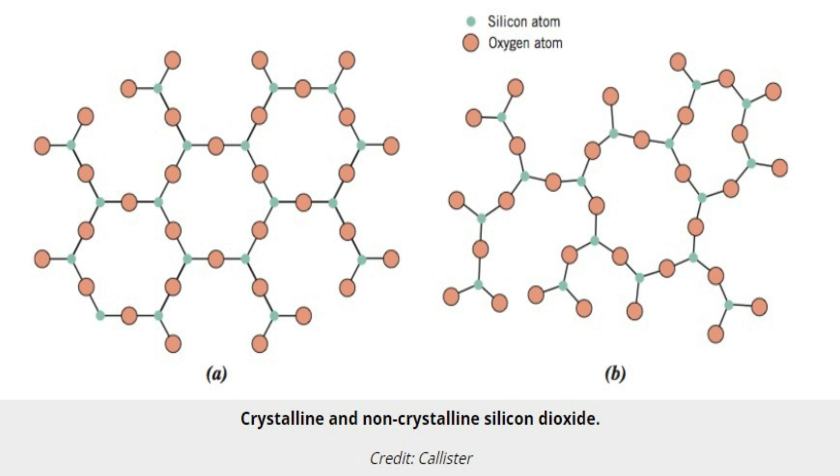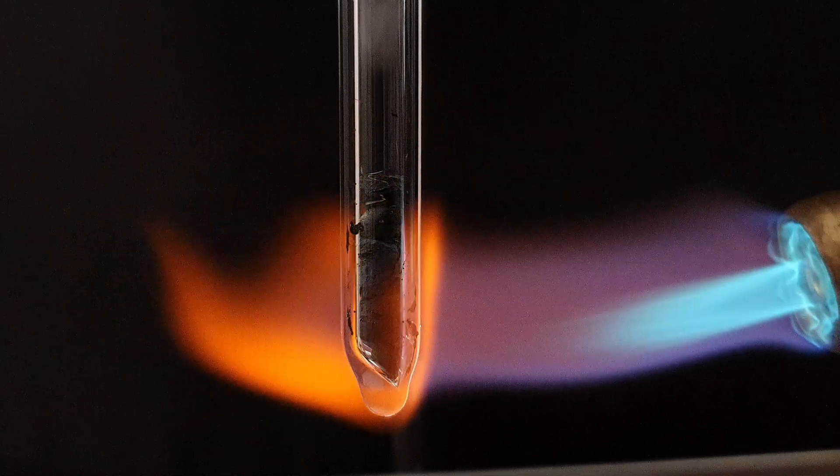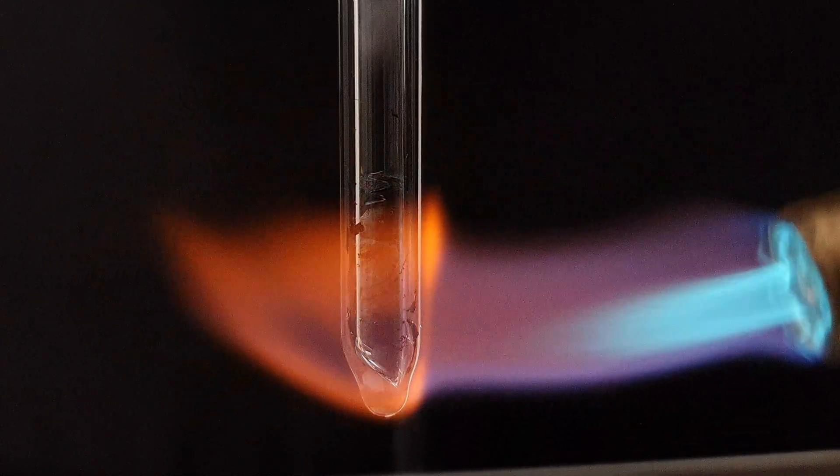Lithium, however, rips the oxygen out of the silicon dioxide and forms lithium oxide. This reaction causes massive damage to the structural integrity of the glass.